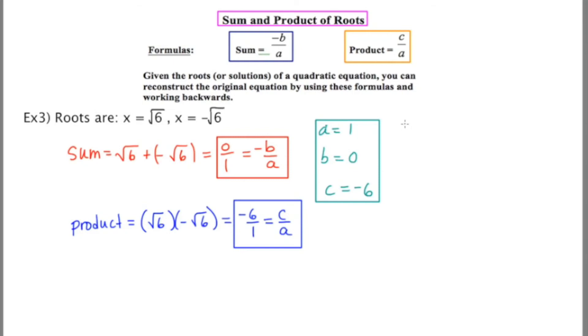Putting this into the quadratic equation, ax squared plus bx plus c equals 0, we end up with 1x squared, there's no linear term, but there is a constant of negative 6 equals 0. This is the quadratic equation which when factored, or if you use the quadratic formula on it, you're going to get the answers x equals root 6 and x equals negative root 6.